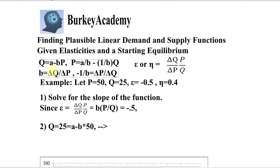So here's an example. Let's suppose that our starting price is $50, our equilibrium price, and our equilibrium quantity is 25 units. And suppose for this product that we're thinking of, we know the price elasticity of demand is minus 0.5, and the price elasticity of supply is positive 0.4.